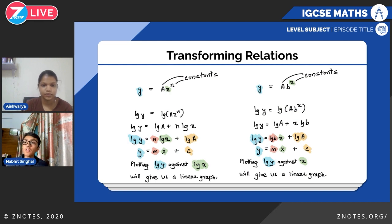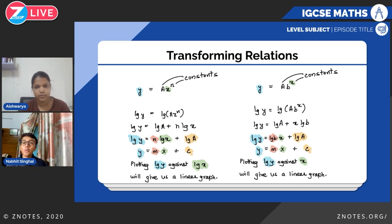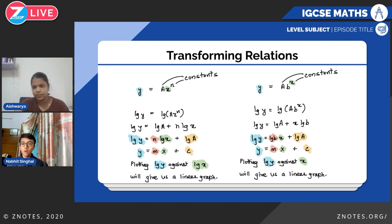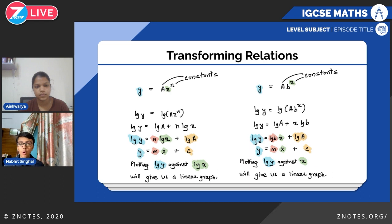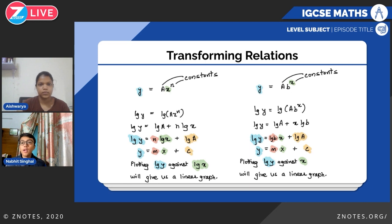Now we have transforming given relationships. Starting with a relationship in the format y equals ax to the power n, where a and n are constants. We use logarithms and take log on both sides: log y equals log(ax^n), then simplify using laws of logarithms to get log y equals n·log x plus log a. This is similar to the gradient intercept form — log y compares to y, log x to x, n to m, and log a to c. When you plot log y against log x, you get a linear graph with gradient n and y-intercept log a.